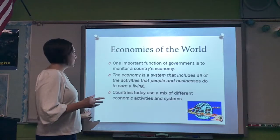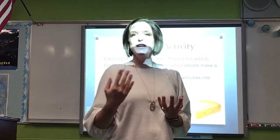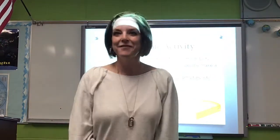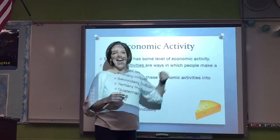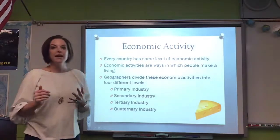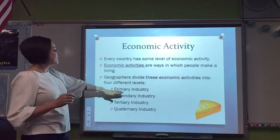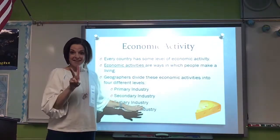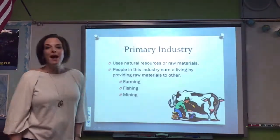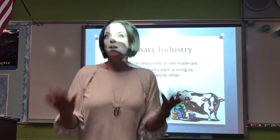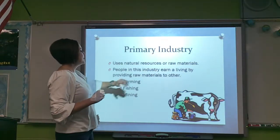Now we're going to talk about economies and economic activity levels. Your book gives a great example based on food — specifically cheese. Economic activities describe how people in a country are going to make a living. We have four levels: primary industry, secondary industry, tertiary — which is three — and quaternary, which is four. Our primary industry is going to be the baseline: farming, fishing, mining — anything we can get from planet Earth. These are raw materials.